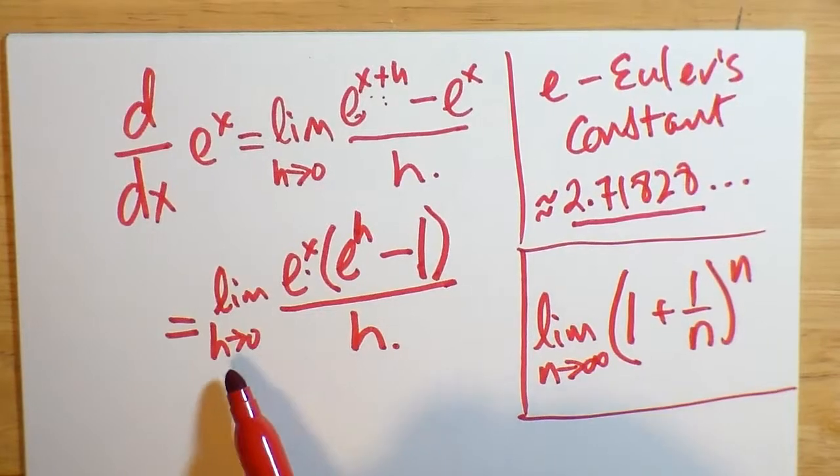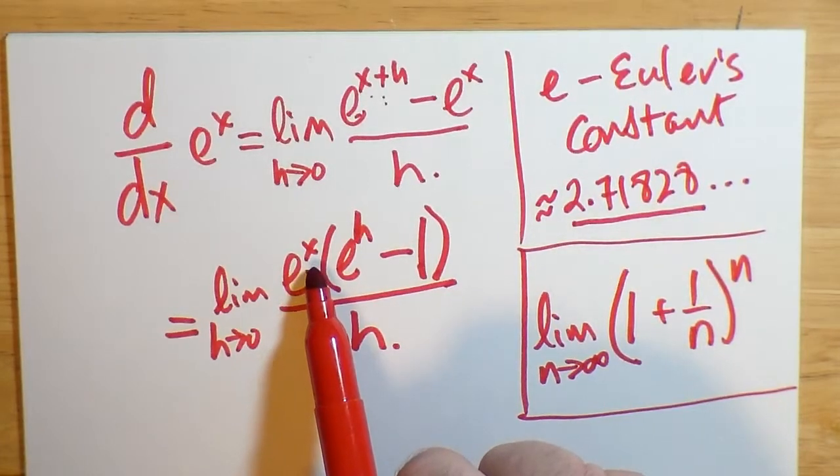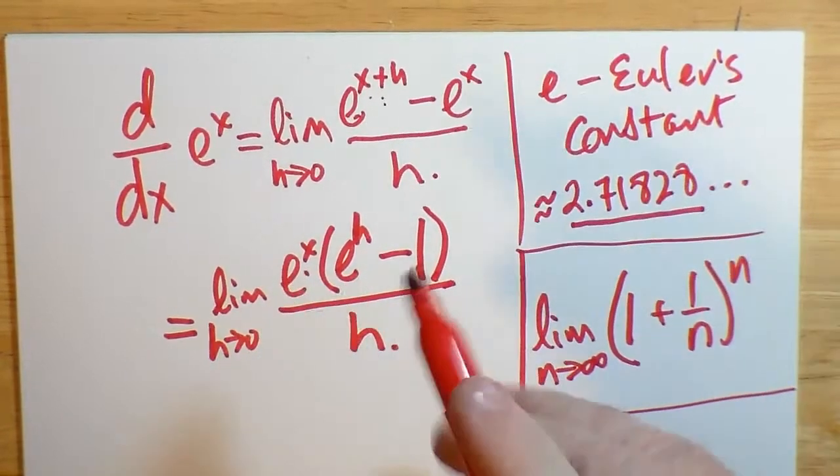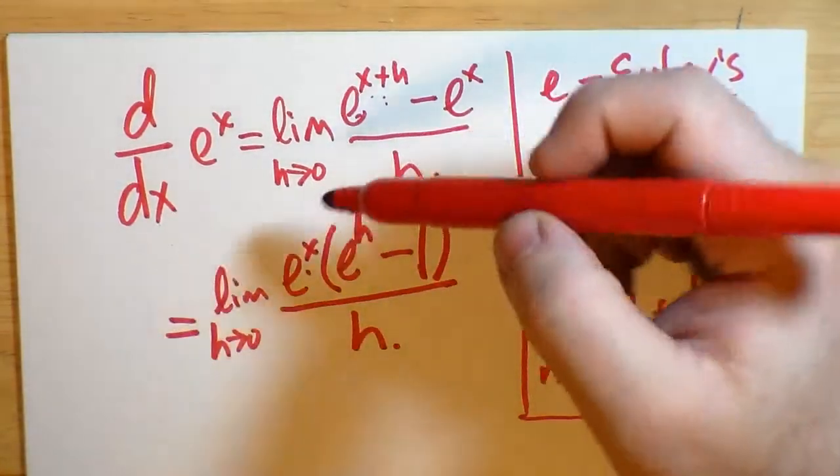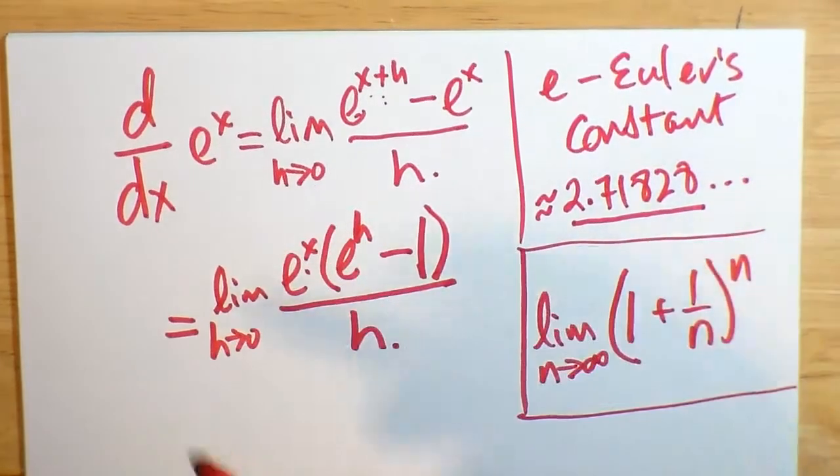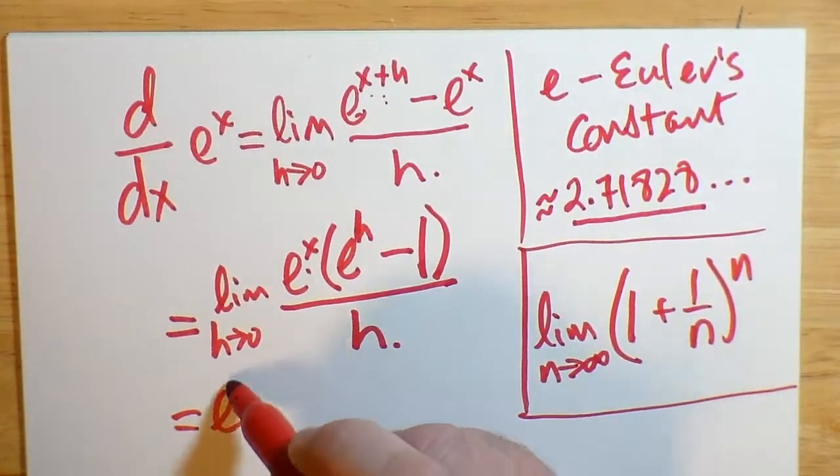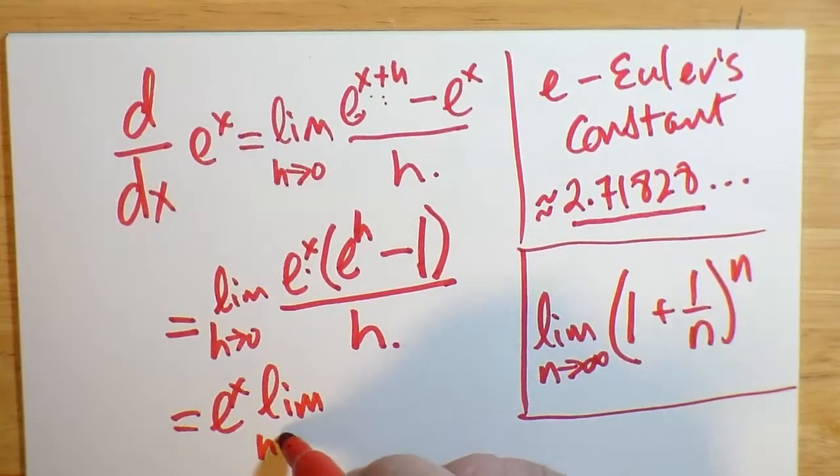Now, as you can see here, the limit is on h. h is the one going to 0. And over here we have e to the x. And there's no h in this particular e. And because of the constant law, this basically says that x is a constant with respect to h. And so we're allowed to take out e to the x outside the limit as h goes to 0.